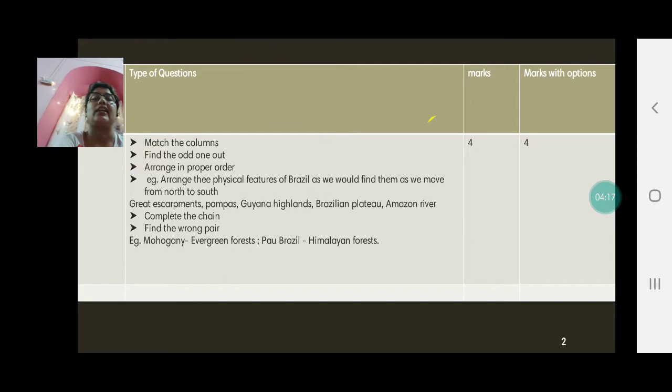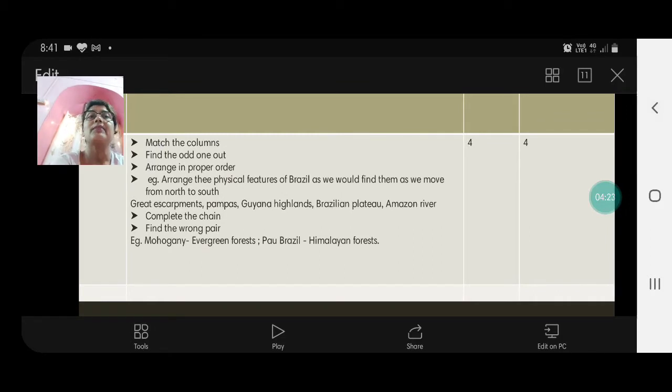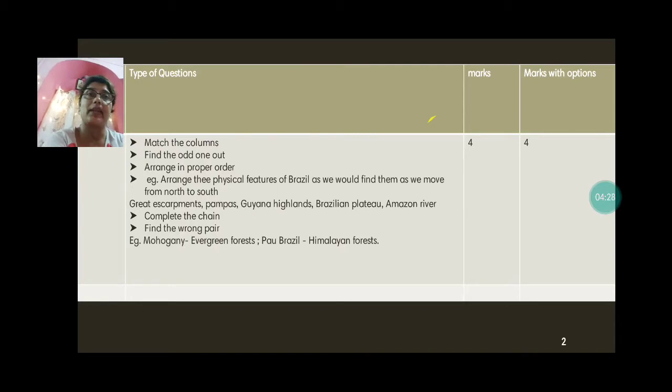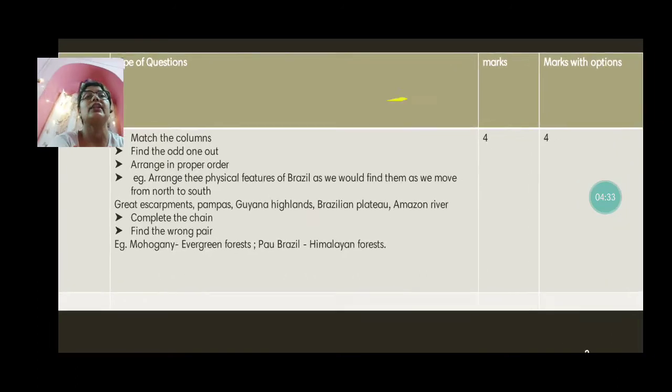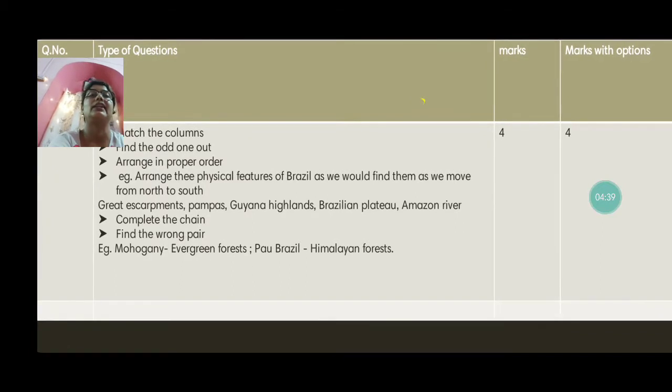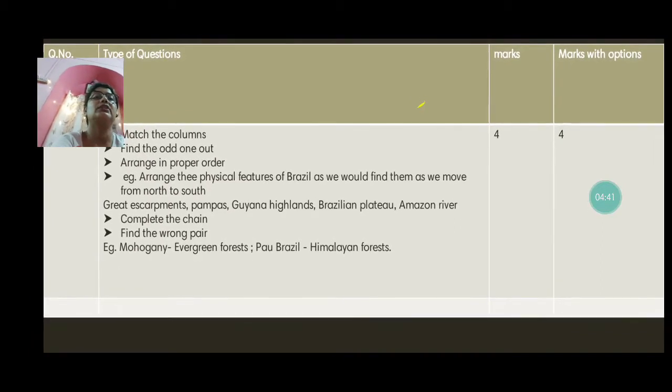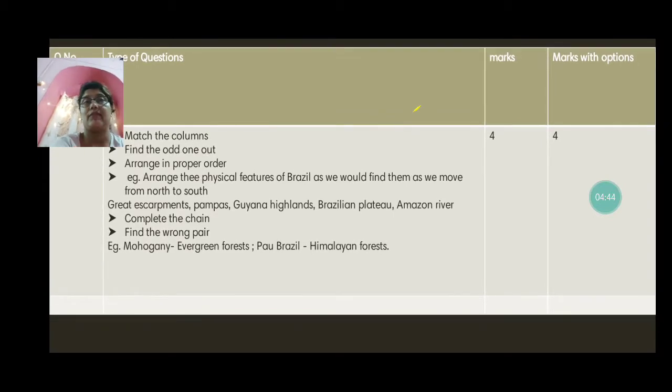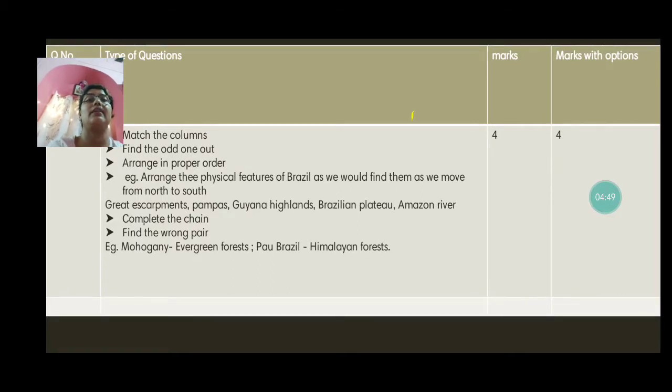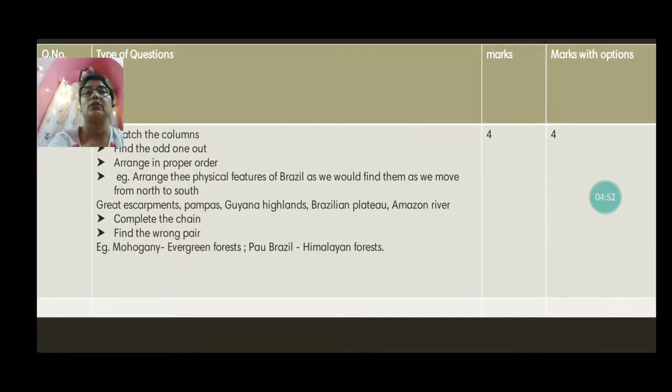Then complete the chain. Here there will be 3 columns, A, B and C. So you have to write A column as it is. Then write the answer, write the correct answer in B column and the correct chain continuation in C column. So that is how we complete the chain. Then find the wrong pair. Now here we have, for example, Mahogany is an evergreen forest. Pau Brazil, Himalayan forest. The wrong pair is, so you have to write wrong pair, Pau Brazil, Himalayan forest. So this is the way you may get objective. So again another 4 marks for objectives. So if you are right most of the time, you can score 8 on 8 here.